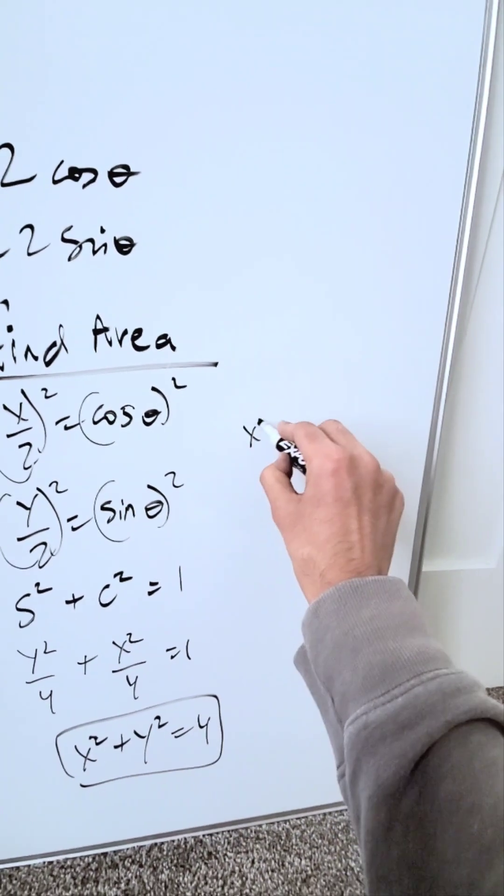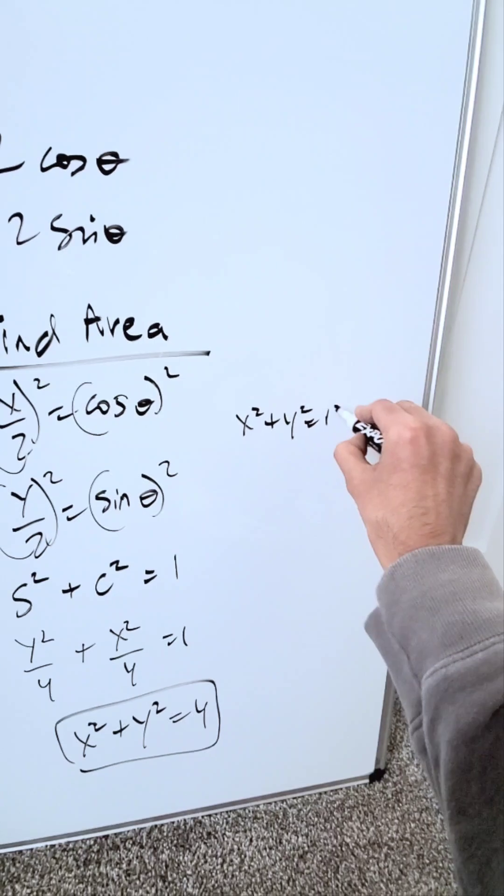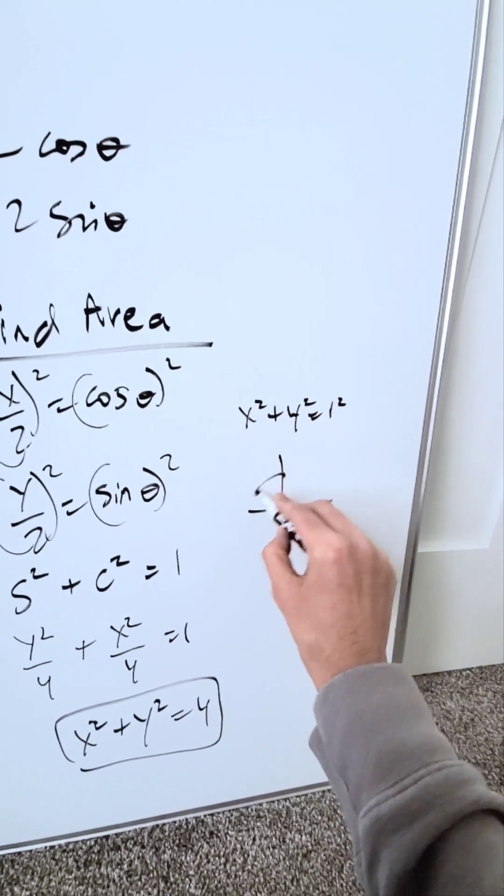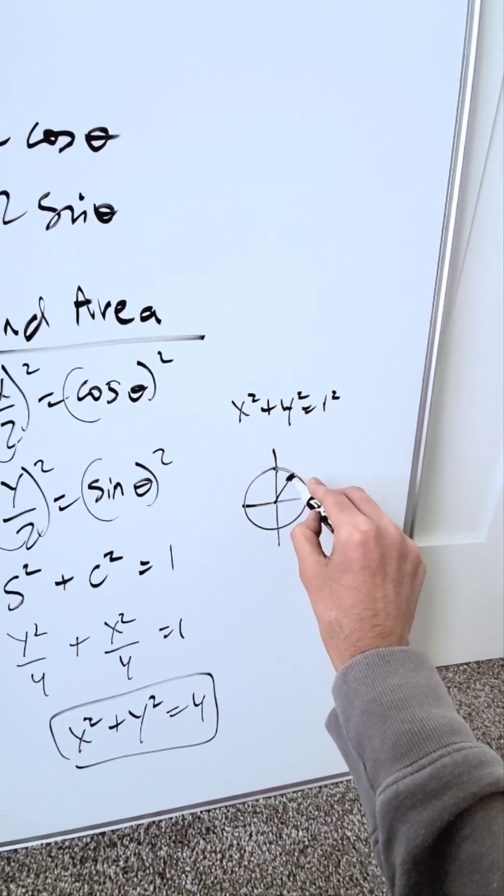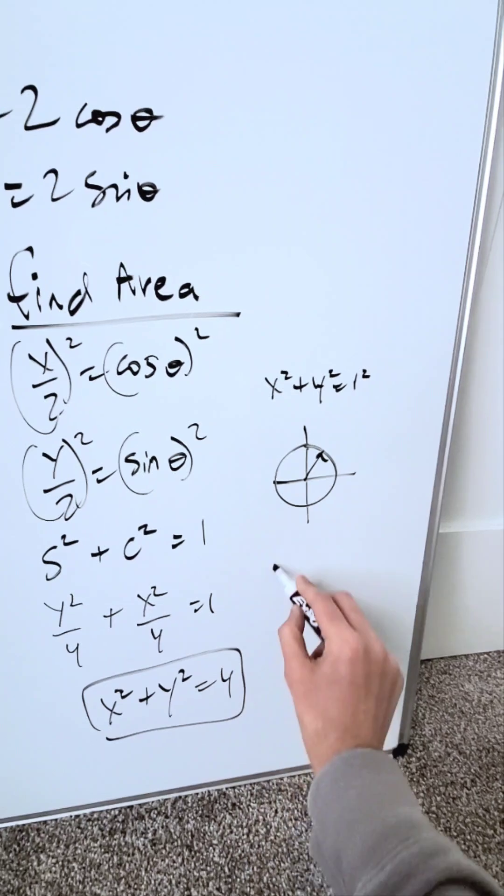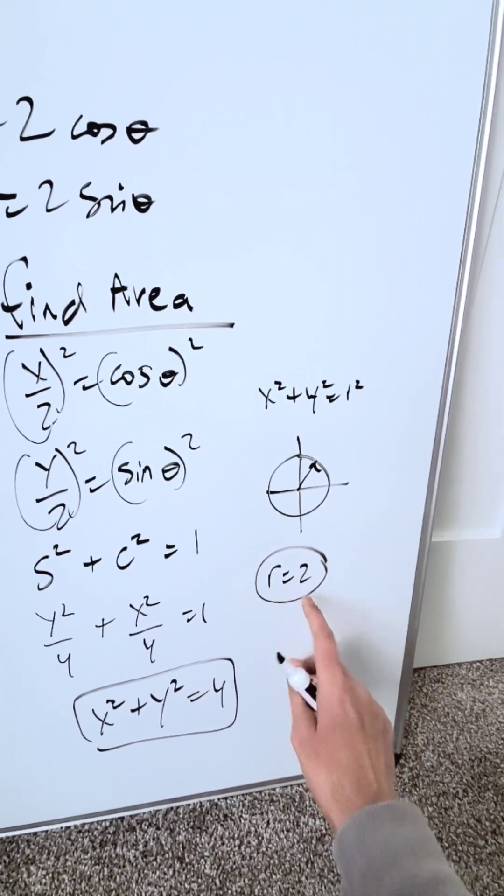You know the form x squared plus y squared equals r squared is a unit circle which is centered around the origin with a given radius. I know r squared is equal to 4, therefore my radius is equal to the square root of that, which is 2.